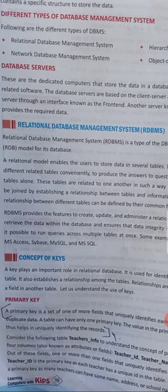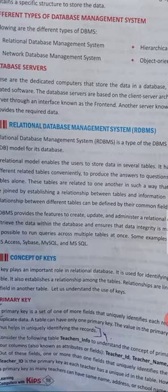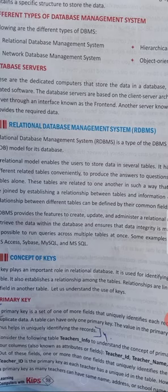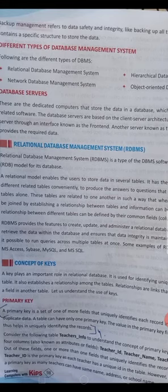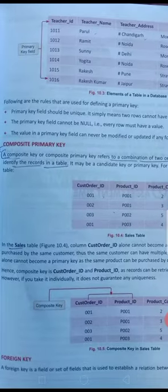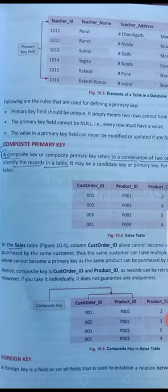We will read about some keys: Primary, Candidate, Composite, and Foreign. The first is Primary Key. A primary key is a set of one or more fields that uniquely identify each record in a table. Whenever we store a unique record in our table, it is created by the primary key, and this column is also known as the primary column. Examples include Teacher ID in teacher information and Roll Number in student information and Product ID in product information. The primary key field must be unique, cannot be null, and can never be modified.